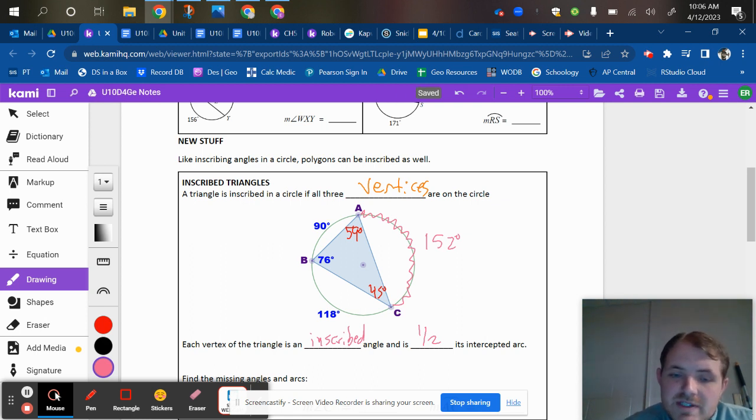Now what's also really interesting is that if you look at 90, 152, and 118, if you were to connect those three arcs, hopefully you're seeing it, that you would have 360 degrees all together.